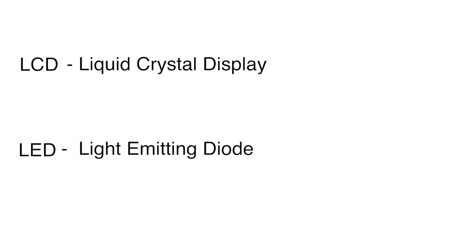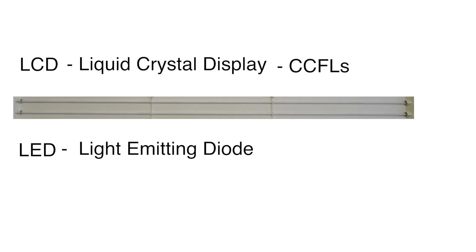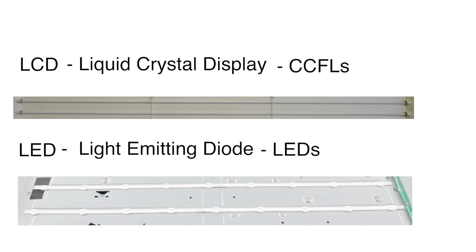The major difference between LCD TVs and LED TVs is that they use different backlighting. LCD TVs use fluorescent tubes called Cold Cathode Fluorescent Lamps, also known as CCFLs, for their backlighting, and LED TVs use Light Emitting Diodes for their backlighting.